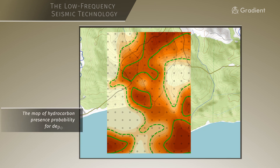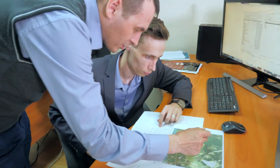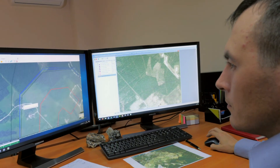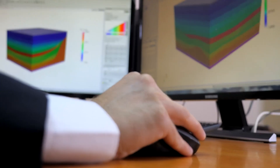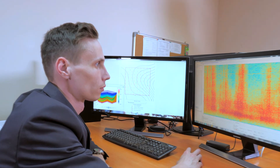Once data has been collected and results interpreted, the customer is provided with maps reflecting a forecast of the oil and gas potential of the survey area, with reference to the target horizons as well as recommendations for drilling deep wells. The use of LFS technology in combination with a traditional seismic survey and data on the oil content identified in previously drilled wells makes it possible to detect and delineate hydrocarbon deposits, assess the oil and gas potential of survey areas, select the optimal sites for well drilling, and ultimately reduce the risk of drilling dry wells while maintaining a high level of deep drilling efficiency.